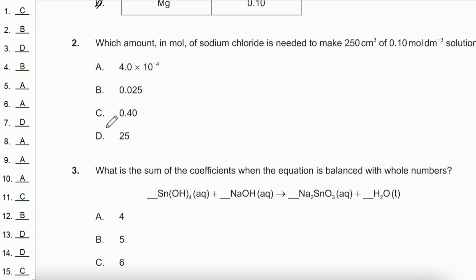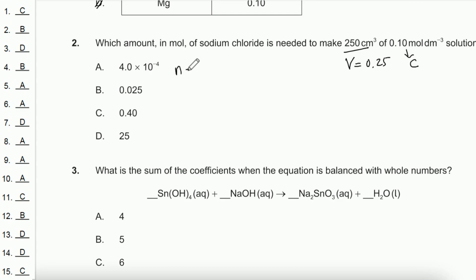Question 2: Which amount in mol of sodium chloride is needed to make 250 cm³ of 0.1 mol per dm³ solution? Convert 250 cm³ to dm³ by dividing by 1000, giving 0.25 dm³. Then n = c × v = 0.1 × 0.25 = 0.025 mol. The answer is B.